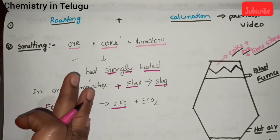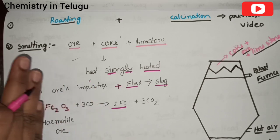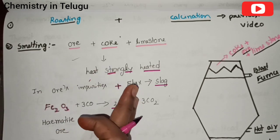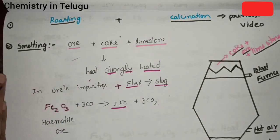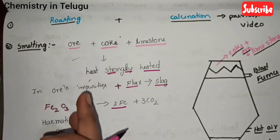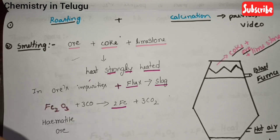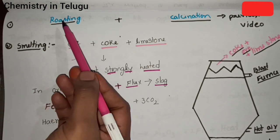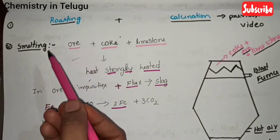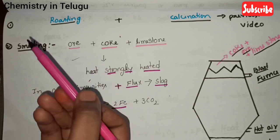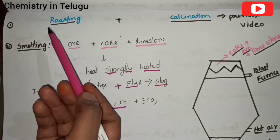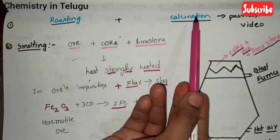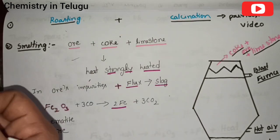In this video, we cover the principles of metallurgy. Roasting and calcination is the most important topic, which was covered in the previous video.